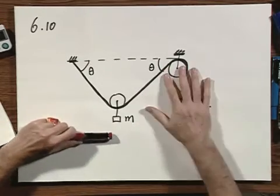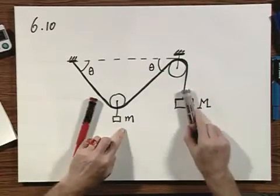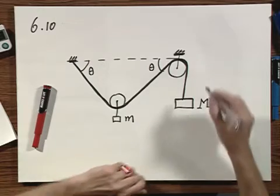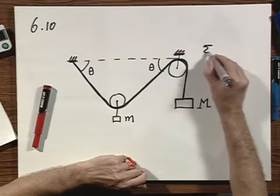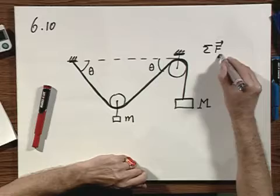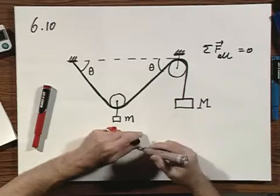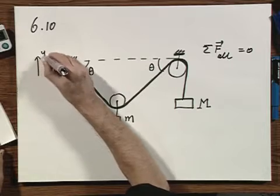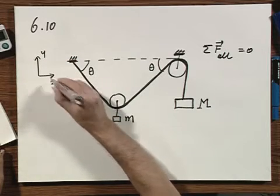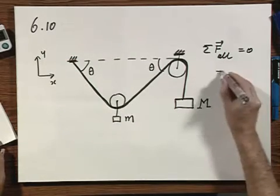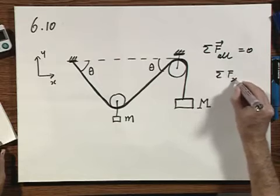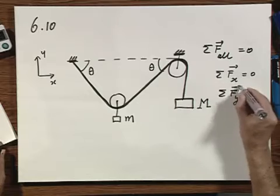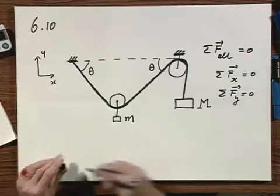We are being told that there is equilibrium, in other words that m is not going down nor capital M going up. Well that is only the case if the sum of all forces is zero. I will decompose in y and x direction. It's often very handy. So the sum of all forces in x direction must be zero, and independently the sum of all forces in the y direction must be zero.